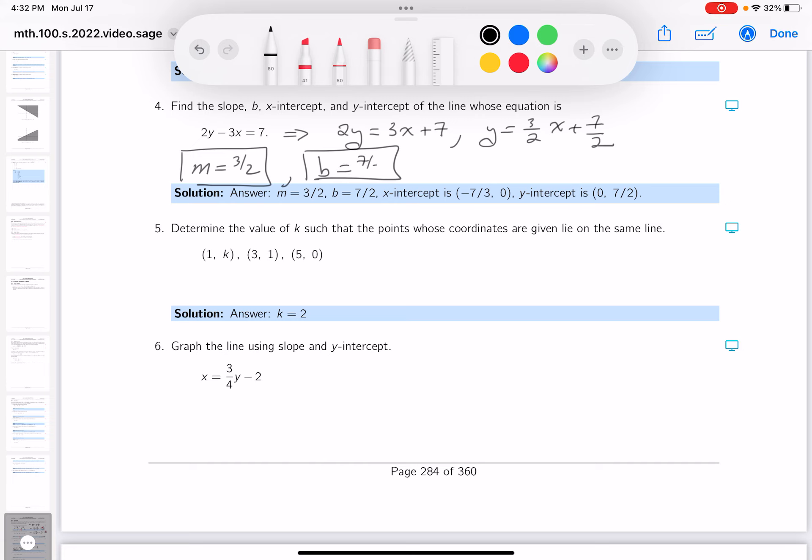I could put the y-intercept down pretty quickly. What's that going to be? Well, I know what the b is, so it's going to be (0, 7 over 2). And the x-intercept, a little more involved, but it's not that bad.